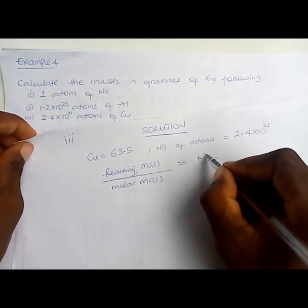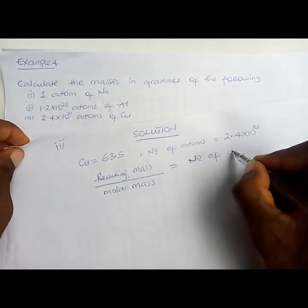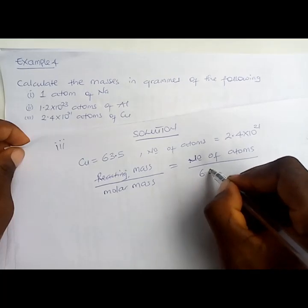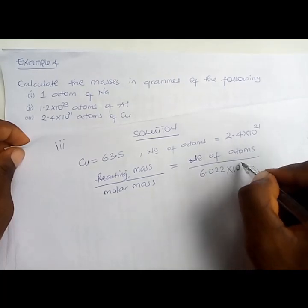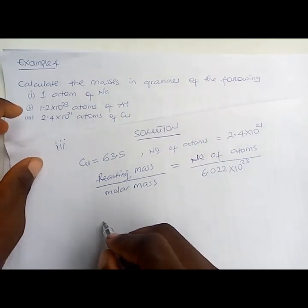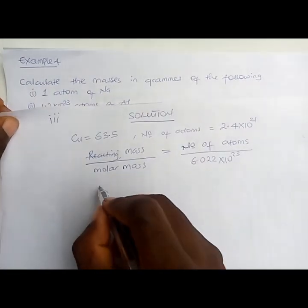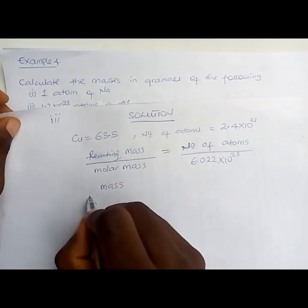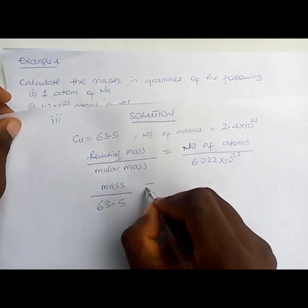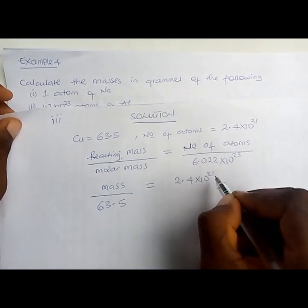Mass over molar mass equals number of atoms over 6.022×10²³. Substituting: mass over 63.5 equals 2.4×10²¹ over 6.022×10²³.